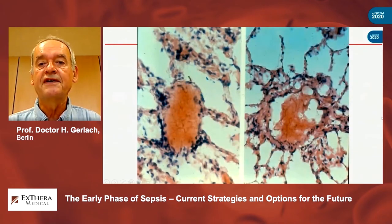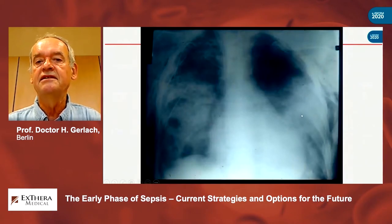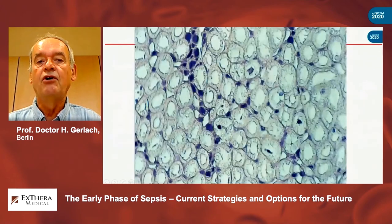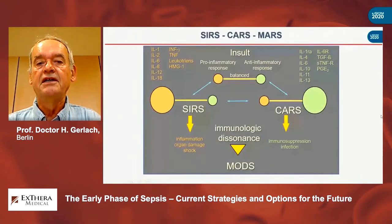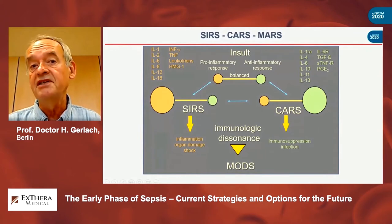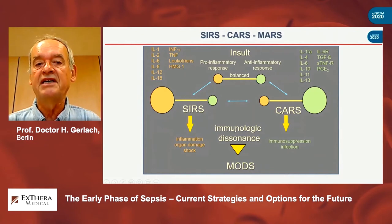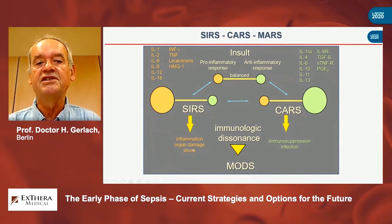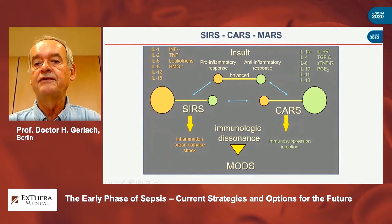The organ dysfunction is induced by thrombus formation — for instance, here in the lung capillaries, which is then seen as infiltration on chest X-ray — and also in the kidney capillaries, which induces acute renal failure. The whole picture can be divided into a pro-inflammatory response and an anti-inflammatory response. A very complicated pattern of cytokines is involved. We have pro-inflammatory reactions with inflammation, organ damage, and shock, and anti-inflammatory responses with immunosuppression opening the body for second-hit infection.